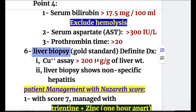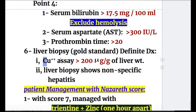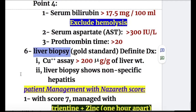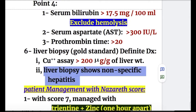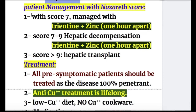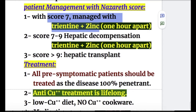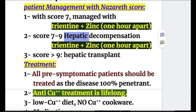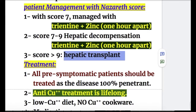Number six, liver biopsy is the gold standard for diagnosing Wilson disease and gives definitive diagnosis. Copper assay on biopsy shows more than 200 micrograms per gram of liver tissue. Regarding management with Nazer score: a score up to seven — trientine and zinc, given one hour apart. Score seven to nine with hepatic decompensation — same medications. Score more than nine — hepatic transplant.